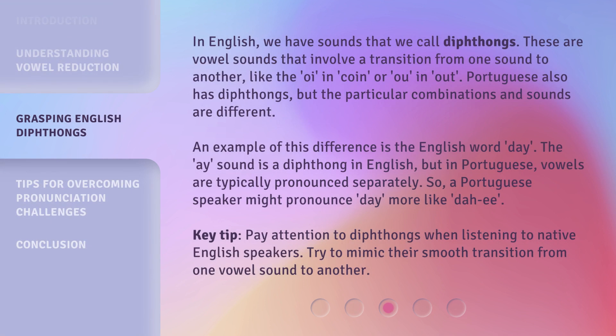In English, we have sounds that we call diphthongs. These are vowel sounds that involve a transition from one sound to another, like the 'oi' in 'coin,' or 'ou' in 'out.' Portuguese also has diphthongs, but the particular combinations and sounds are different. An example of this difference is the English word 'day.' The 'ai' sound is a diphthong in English, but in Portuguese, vowels are typically pronounced separately, so a Portuguese speaker might pronounce 'day' more like 'da-ee-ee.' Key tip: pay attention to diphthongs when listening to native English speakers, and try to mimic their smooth transition from one vowel sound to another.